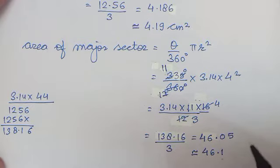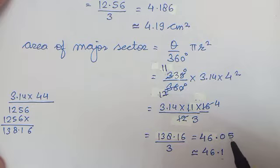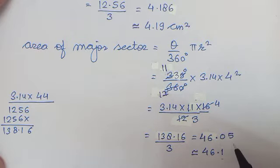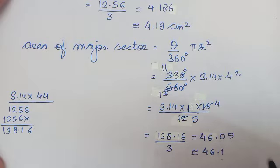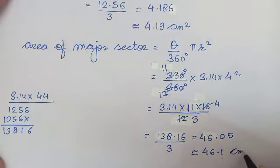Book mein rounding off ke baare mein: agar 5 ke case mein pehle even number hai toh simply drop karte hain, odd number hai toh increase karte hain. Lekin book mein zero ke case mein bhi bada diya gaya hai. Toh area of major sector is 46.1 centimeter square approximately.